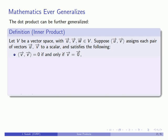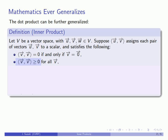First, the inner product of any vector with itself is going to be 0 if and only if the vector is itself the 0 vector. For all other cases, the inner product of a vector with itself is going to be greater than 0.